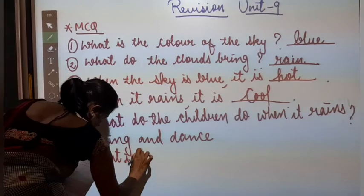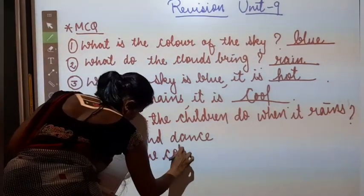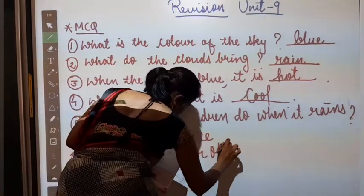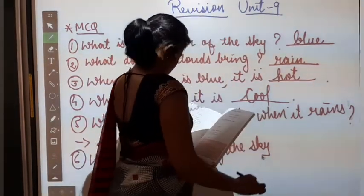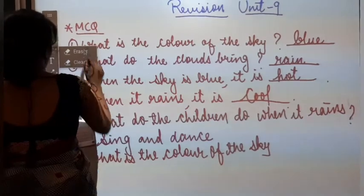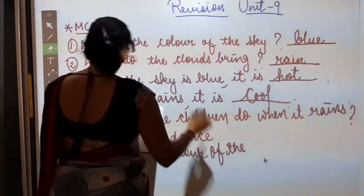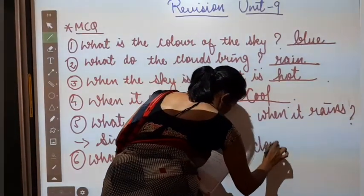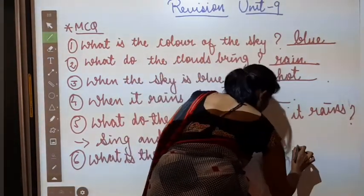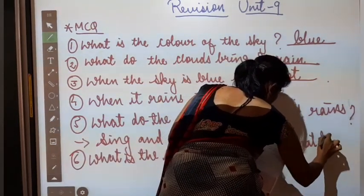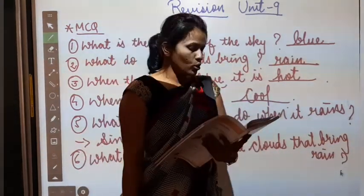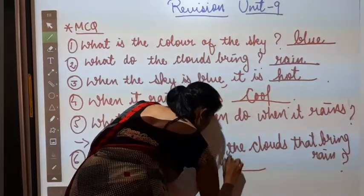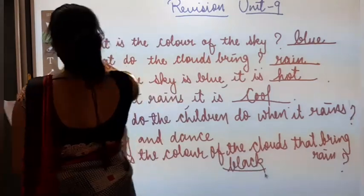What is the color of the sky? Of the sky. Rain. What is the color of the clouds? Clouds. Then rain. Rain. Yellow, white, black or blue. So what will be the answer? Black. Okay?